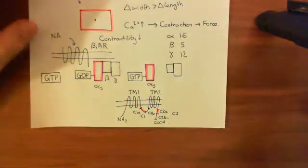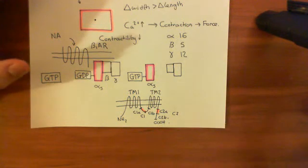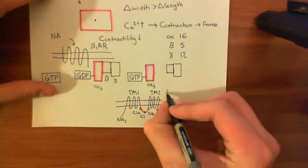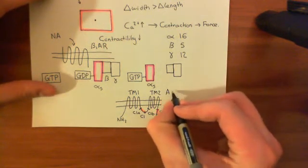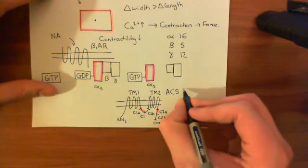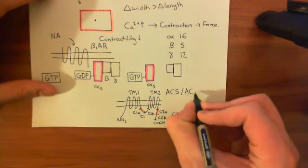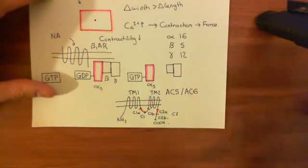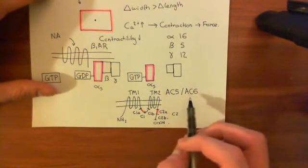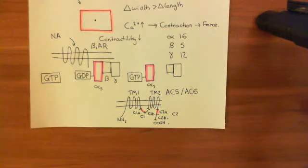The forms of adenylyl cyclase expressed in cardiomyocytes are adenylyl cyclase 5 (AC5) and adenylyl cyclase 6 (AC6). There are nine different known isoforms of adenylyl cyclase in total, and these two are the specific variants expressed in cardiomyocytes.